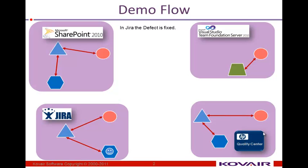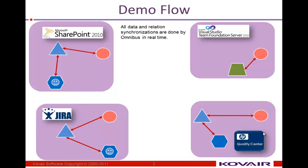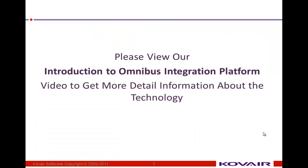The developer fixes the defect in Visual Studio and also changes the status of the defect in Jira to fixed. The status of that particular defect is then synchronized back to SharePoint. All data and relations are synchronized by Omnibus in real time. I strongly recommend you view the introduction to the Omnibus integration platform, which will explain how Omnibus achieves all these different integrations and all the functionalities Omnibus has to offer.